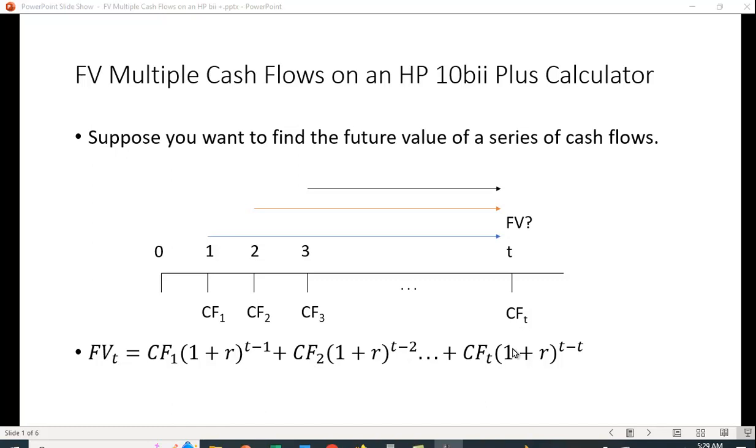And the last cash flow in time period t is going to grow by t minus t periods, which is zero. And anything raised to the zero power gives you a one, so it's just the value of the cash flow. The cash flow is already in the correct time period, so you don't compound it at all.